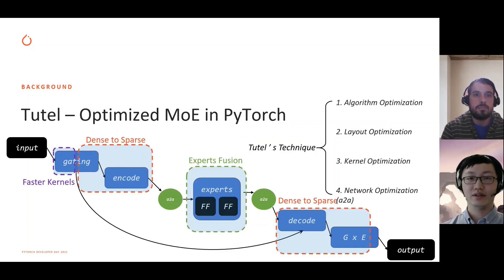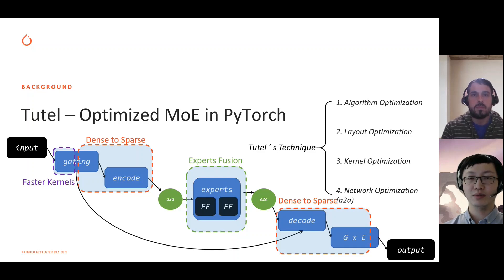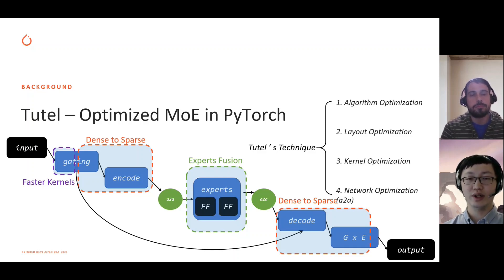Currently, FairSeq has an MOE implementation in PyTorch, but its efficiency may not be high at large scale. TUTO aims to provide an optimized MOE implementation. It deeply optimizes many MOE logics from critical paths, not only shortening the MOE computation stages, but also improving resource utilization on GPU. These optimizations can be categorized into four directions.